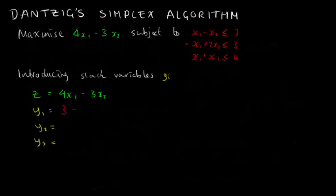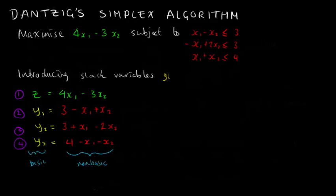So the variables on the left hand side of the equations are the basic variables, whilst the ones on the right are the non-basic variables. Now if we set all our non-basics to zero, we can find our basic feasible solution.